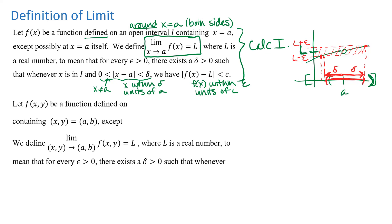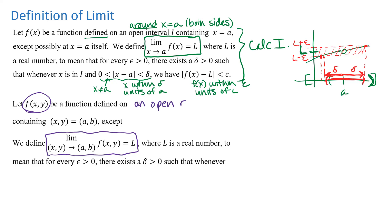Now we want to think about how to modify that definition for a function of two variables. We could extend it to more variables, but the pictures get more difficult to draw, so we'll start with two variables. What we want to define is this limit — when the point (x, y) approaches a point (a, b), the function outputs approach a number L. We need this function to be defined essentially all around the point (a, b). Here in two dimensions, since the domain is two-dimensional, we say the function is defined on an open region in the xy-plane.